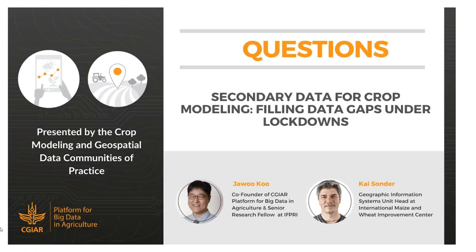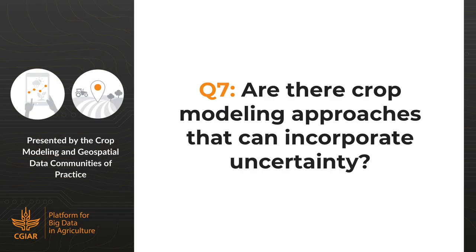On whether crop modeling approaches can incorporate uncertainty: absolutely yes. Under the AgMIP project, there was an uncertainty working group looking at this — uncertainty can come from the model itself, from the data, and from estimation and measurement of that data. There are many ways to address this. It's a quite relevant question and will be addressed more specifically in the next webinar on grid-based modeling.